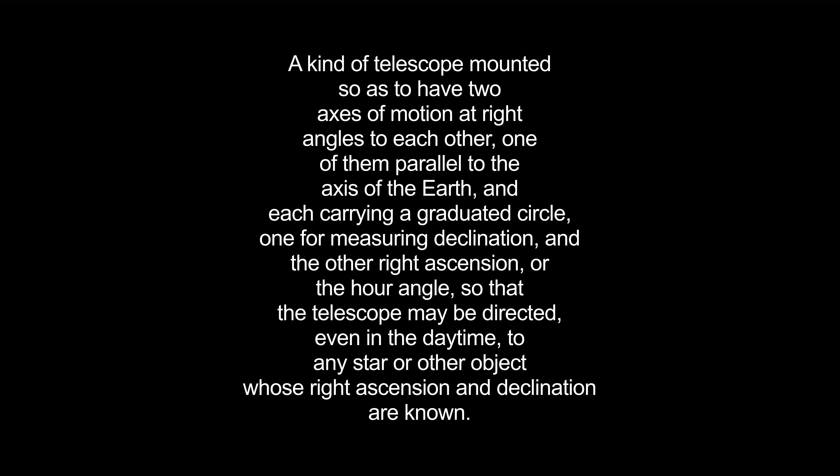Equatorial: a kind of telescope mounted so as to have two axes of motion at right angles to each other, one of them parallel to the axis of the Earth, and each carrying a graduated circle, one for measuring declination and the other right ascension, or the hour angle, so that the telescope may be directed, even in the daytime, to any star or other object whose right ascension and declination are known.